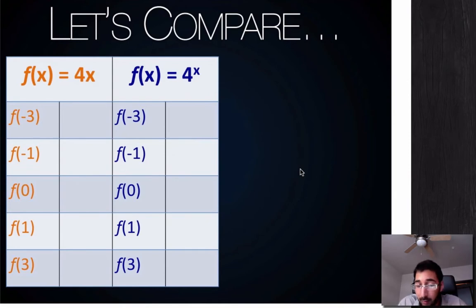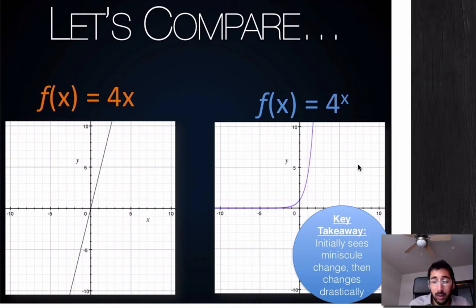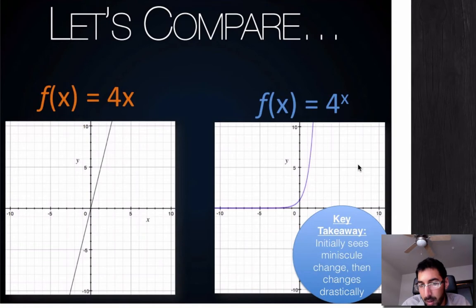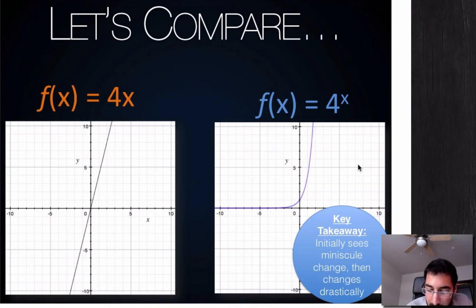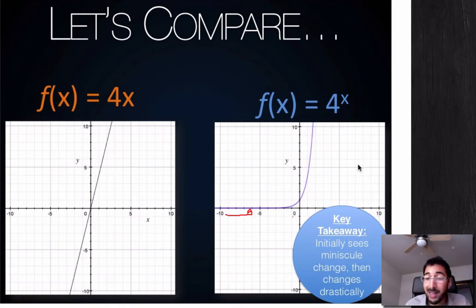Now if we look at the graph of these, you can see the difference. You can see how f of x equals 4x is a straight line — it's a linear function. Now f of x equals 4 to the x is what we're going to call an exponential function. This is what we'll be concentrating on in this entire unit. Notice how in a linear function, it goes up at a constant rate. In an exponential function, it initially has a small increase, and then it radically takes off — it shoots off. So the change grows exponentially.